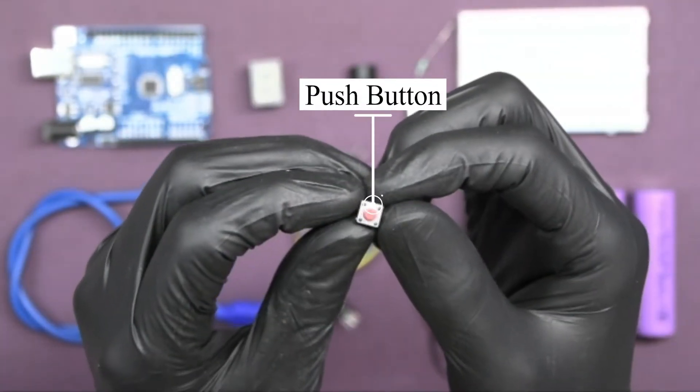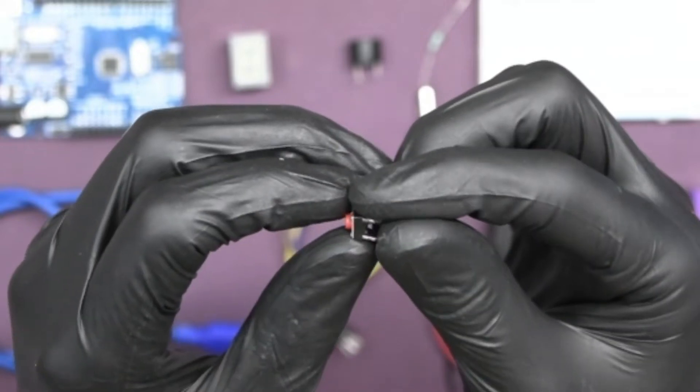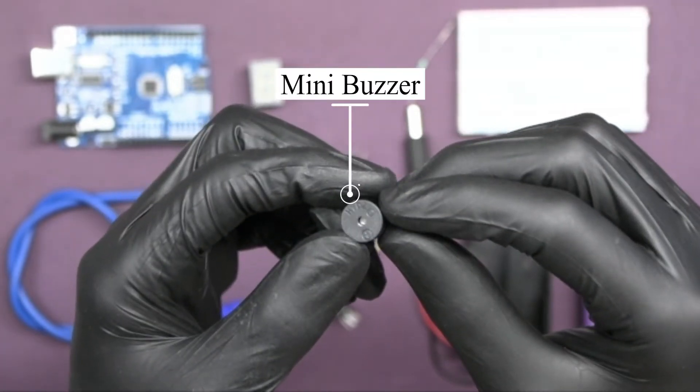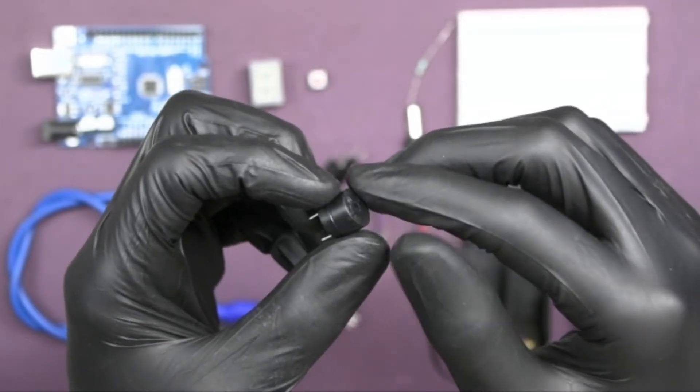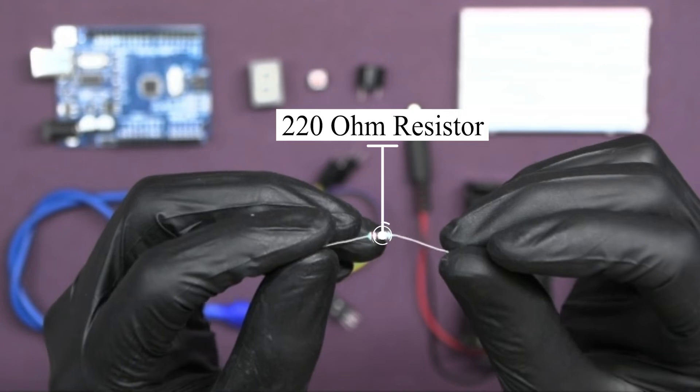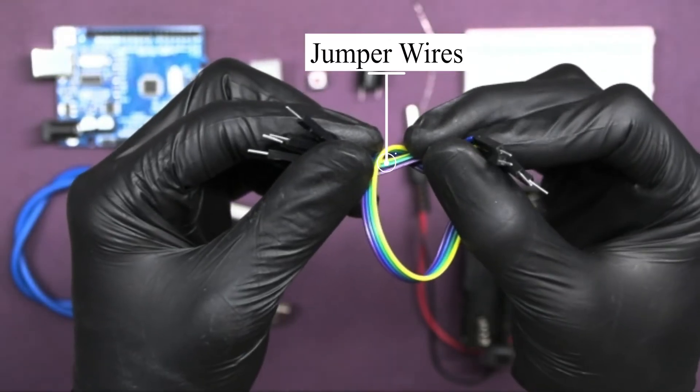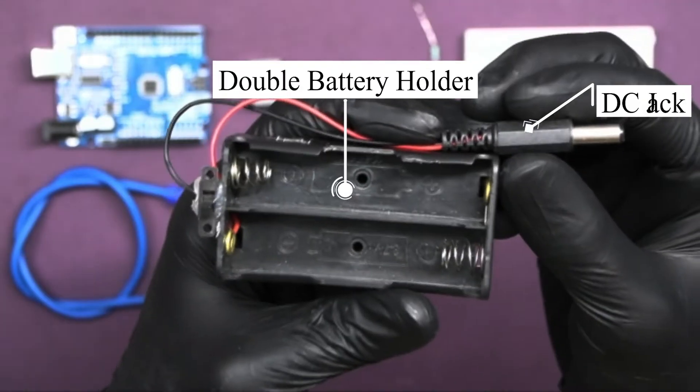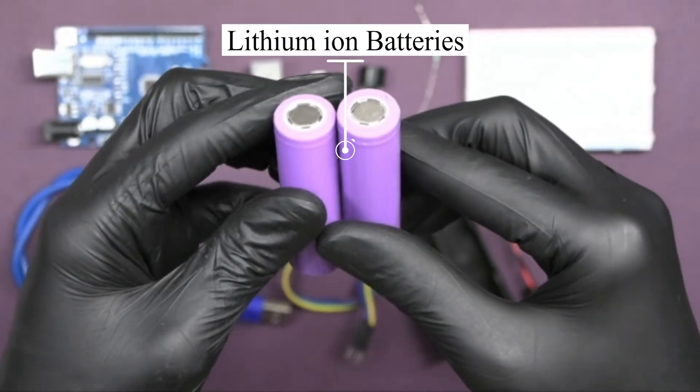We also need a push button which will act as our dice roller, initiating the rolling sequence when pressed. To add some fun sound effects we use a buzzer. It will indicate when the dice is rolling and when the final number is displayed. One 220 ohm resistor, one breadboard, some jumper wires, one USB cable, one double battery holder with DC jack and switch button, and two lithium ion batteries.